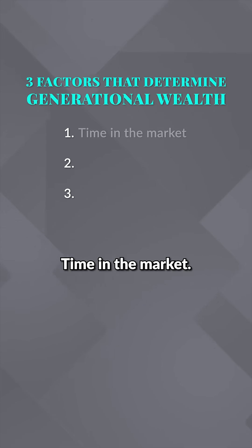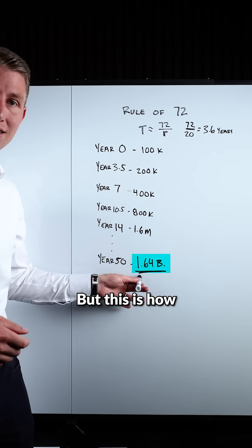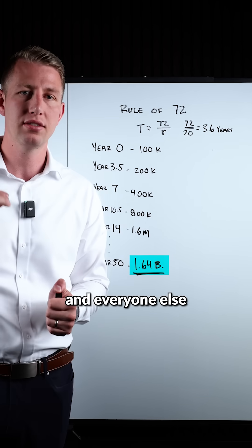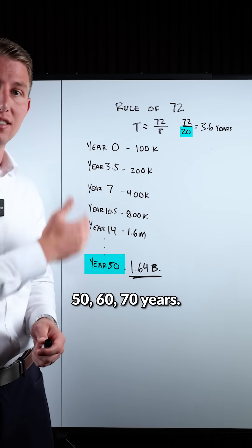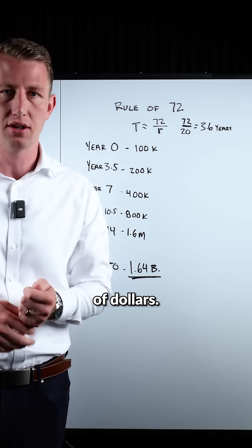Generational wealth is about three things: time in the market, what return can you get over a long period of time, and how much can you invest. This is how the Warren Buffetts and everyone else become worth billions of dollars - they have been able to average this 20% over 50, 60, 70 years, and it turns into billions of dollars.